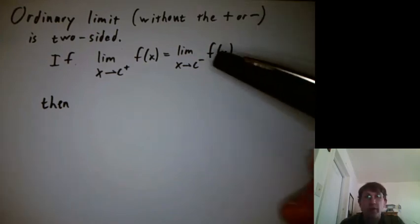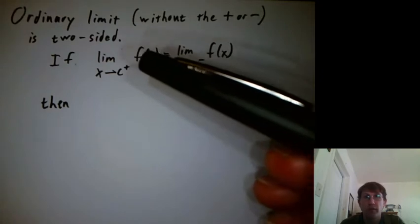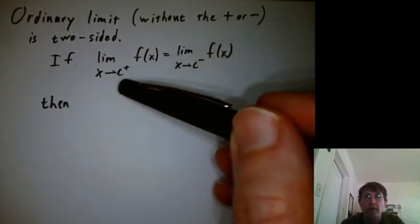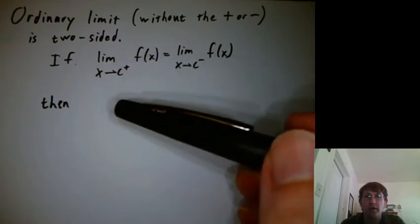So when we first defined limits, the limits we first defined which didn't have the plus or minus (c plus or c minus) are two-sided.